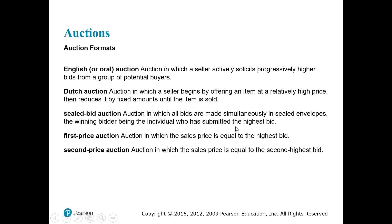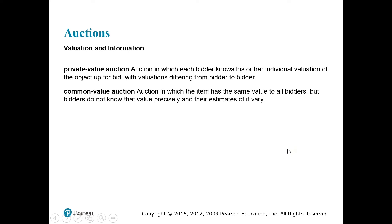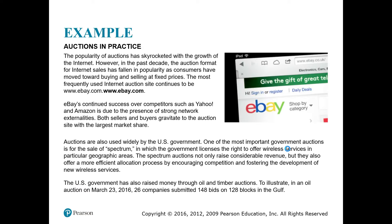In a sealed-bid auction, every participant submits their willingness to pay simultaneously in a sealed envelope, and the winning bidder is the individual who submits the highest bid. In a first-price auction, the sales price equals the highest bid. In a second-price auction, the sales price equals the second-highest bidder's valuation. Regarding information: in a private value auction, each bidder knows their individual valuation, which differs from bidder to bidder. In a common value auction, the item has the same value to all bidders, but bidders do not know that value precisely.